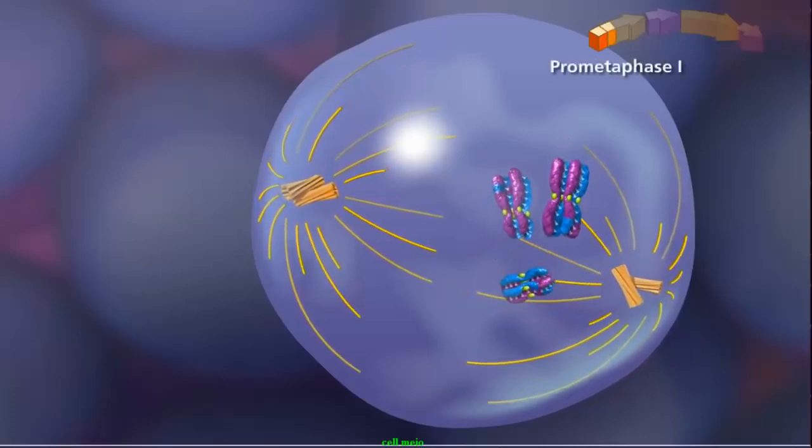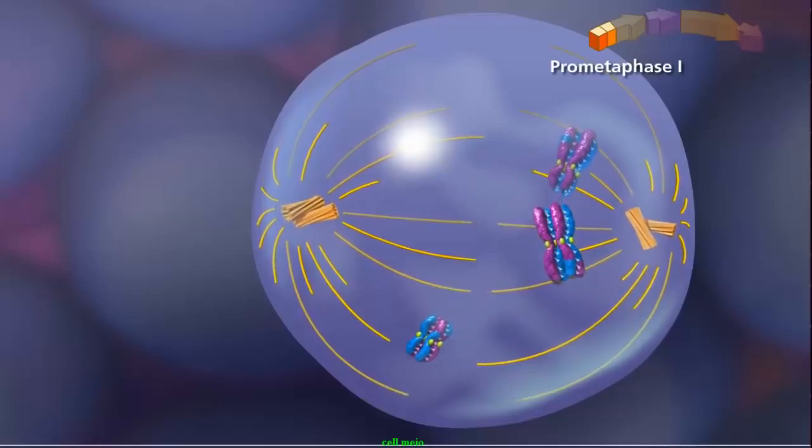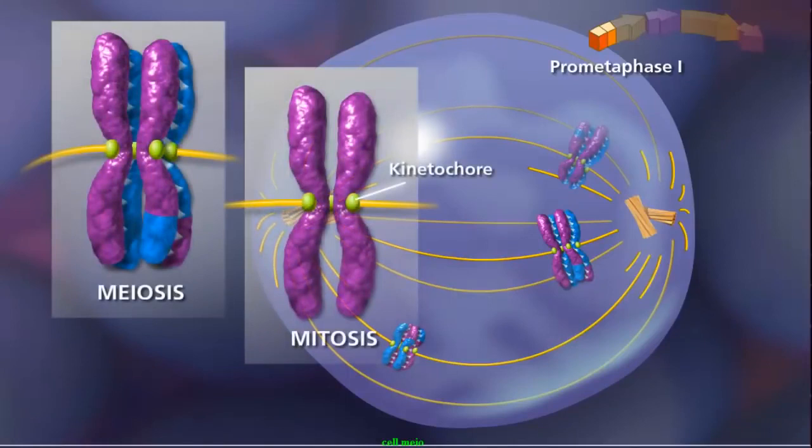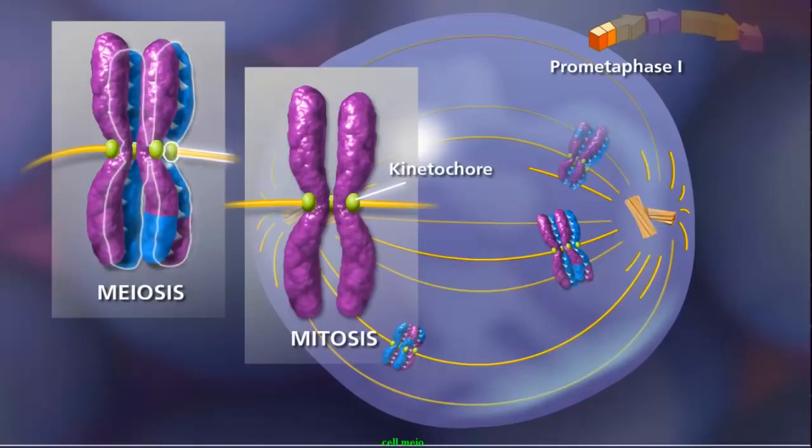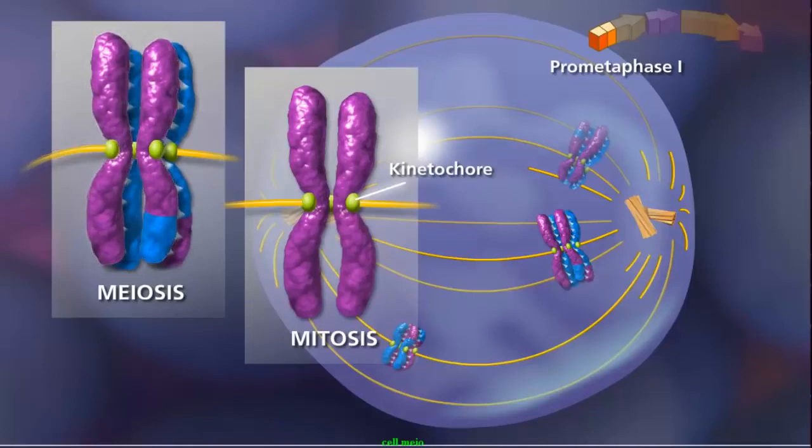In prometaphase I, with the paired centrioles in place, the meiotic spindle is fully formed. The sister chromatids attach to the spindle fibers by their kinetochores. Here, another key difference between mitosis and meiosis occurs. Because of synapsis and crossing over in meiosis, homologous chromosomes remain aligned, so that a pair of sister chromatids is attached to only one pole by the kinetochore microtubules.